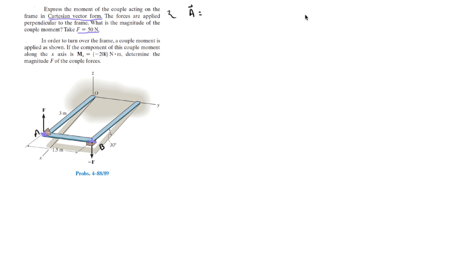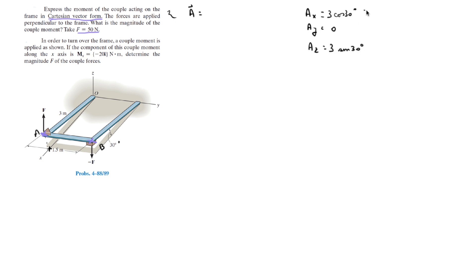First let's find A. Point A has an X component, a Y component, and a Z component. The X component is right here — there is no Y component, the Y component is equal to 0, and the Z component is given by 3 times the sine of 30 degrees. The X component is 3 times the cosine of 30 degrees, this angle right here. So this gives us 2.6 and 1.5.